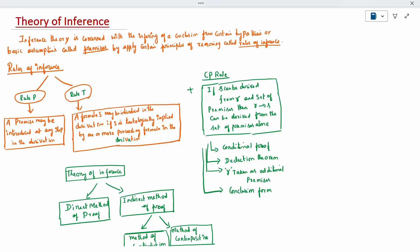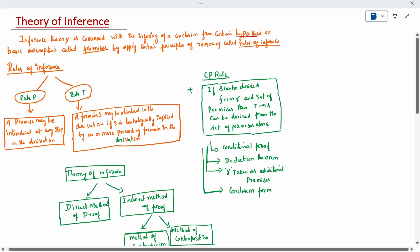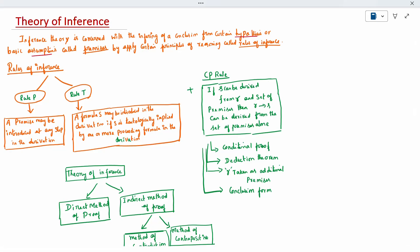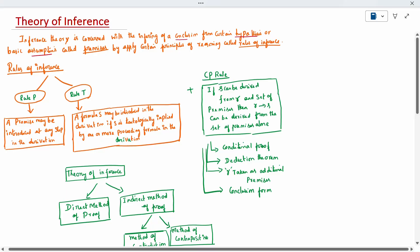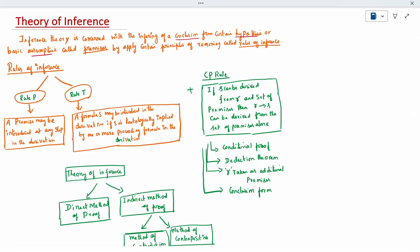Some condition will be given in the question — that is called a hypothesis or assumption. That basic assumption is called premises. For premises, we will have some conclusion given in the question. We have to derive that conclusion using some rules, laws, or equivalence conditions. That is called the theory of inference.